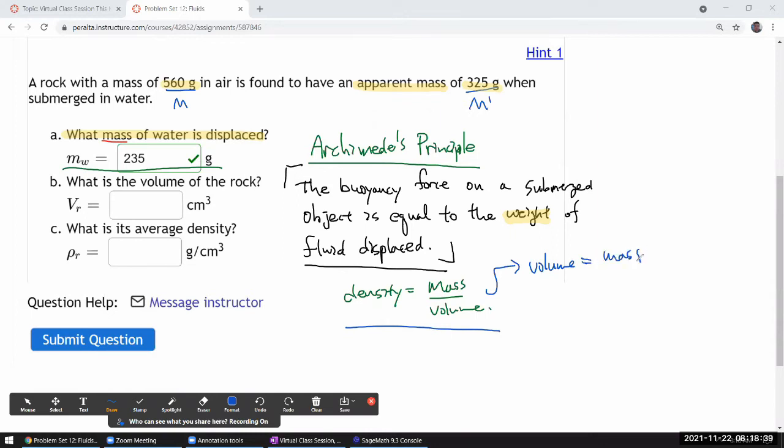mass of the thing that's displaced divided by density of the thing that's displaced. Now I do happen to remember density of water in this nice unit of gram per cubic centimeter as one gram per cubic centimeter. This is something special about water; that's how we define gram. So the volume of the rock must be this many grams divided by one gram per cubic centimeter.